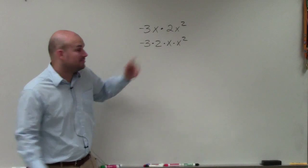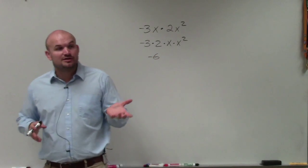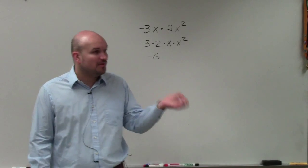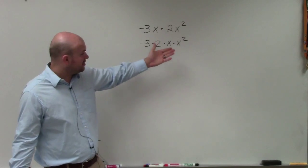The numbers you can multiply - negative 3 times 2 is negative 6. And then x times x squared, these are like terms. You can multiply them because they have the same base of x. If they had different bases, different variables, we wouldn't be able to multiply them.